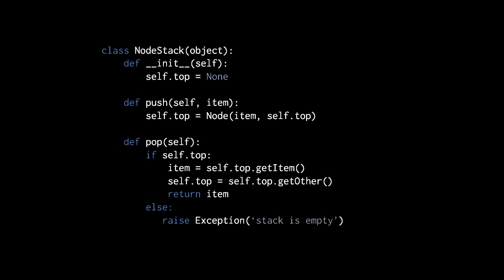The operation to remove and return the top item from a stack is traditionally called pop. So we have our pop method, and notice it takes no arguments, because there's no question of what we're removing — we're always removing the top node. First we check to see if there is a self.top node, and if there isn't, we raise an exception saying you can't pop because the stack is already empty. Otherwise, we simply take the top node, retrieve its value with getItem and return that. But before returning, we remove the top node from the stack by reassigning self.top to the node which the old top pointed to — we invoke self.top.getOther to get that node.